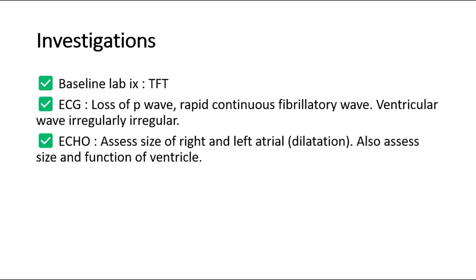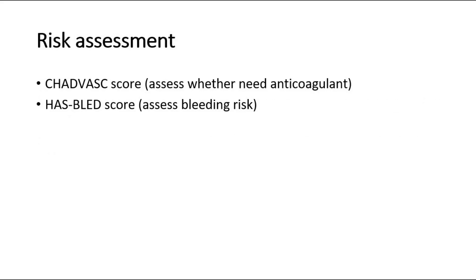An echocardiogram is used to assess the size of the right and left atria for any presence of dilatation, and to assess the size and function of the ventricles. For risk assessment, the CHA₂DS₂-VASc score is done to assess the need for anticoagulation to avoid stroke or other complications of AF.